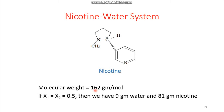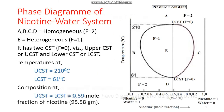When we plot the composition on one axis, this is the mole fraction. Suppose I have 0.5 mole fraction of nicotine — this means I have 0.5 moles of nicotine and 0.5 moles of water, so the mole fraction of nicotine is 0.5.